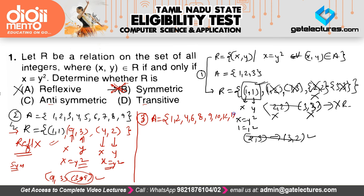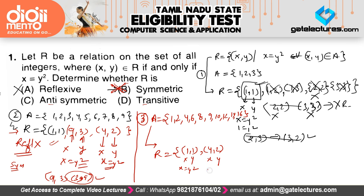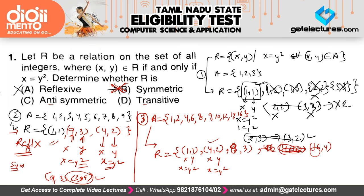In this relation we can have 1 comma 1, because X equals Y squared is satisfied. We can have 4 comma 2, because 4 equals 2 squared. We can have 9 comma 3 — wait, 3 is in the set. We can have 16 comma 4, because 16 equals 4 squared. So the elements satisfying the condition are: 1 comma 1, 4 comma 2, 9 comma 3, and 16 comma 4.